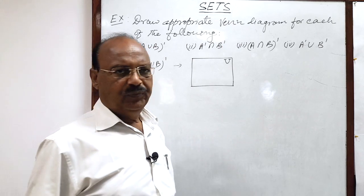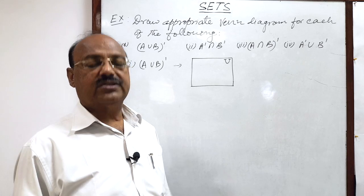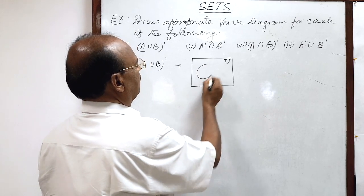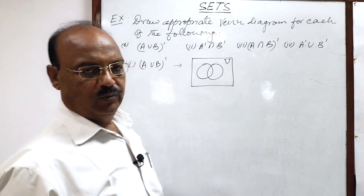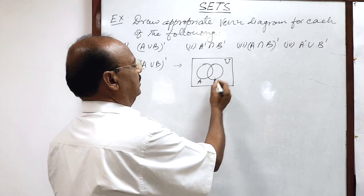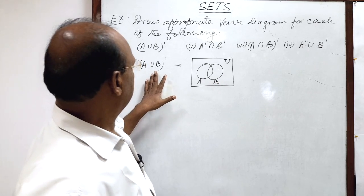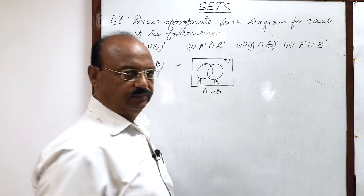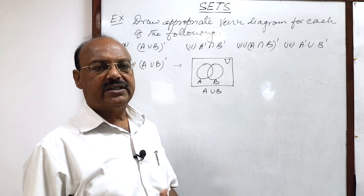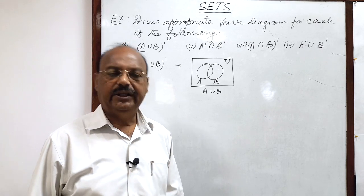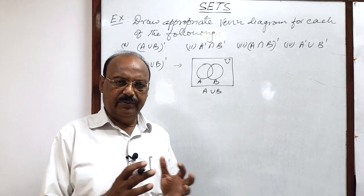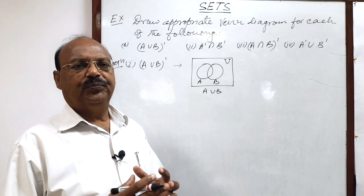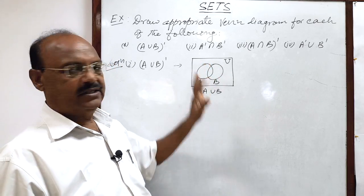It is not mentioned here whether these two sets are disjoint sets or whether some elements are common. In such cases, when it is not mentioned clearly, we take two sets keeping some areas common in both. Suppose this is set A and this is set B. Before finding A union B whole complement, first of all we will find A union B. A union B is obtained by collecting all the elements from both sets A and B.